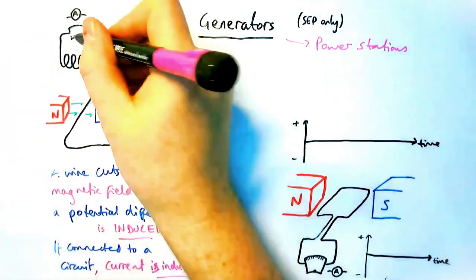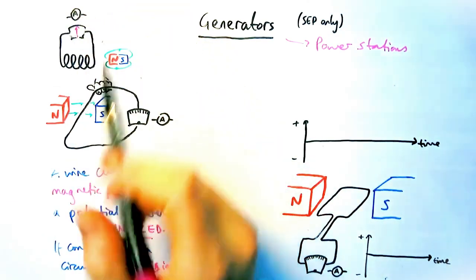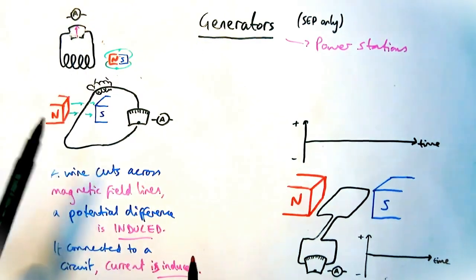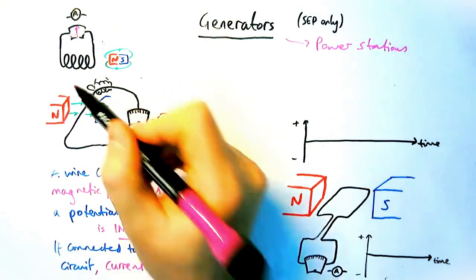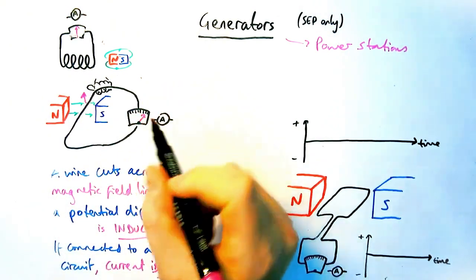The second diagram is very similar, apart from if we have a wire moving in a magnetic field rather than the other way around. That's a hand, by the way, trying to move the wire up and down in the magnetic field. Same thing again,